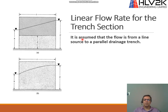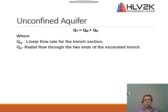For the linear part, it is assumed that the flow is from a line source to a parallel drainage trench, for either a confined aquifer or unconfined aquifer. We have two components for the trench excavation: one is the linear flow and one is the radial flow.